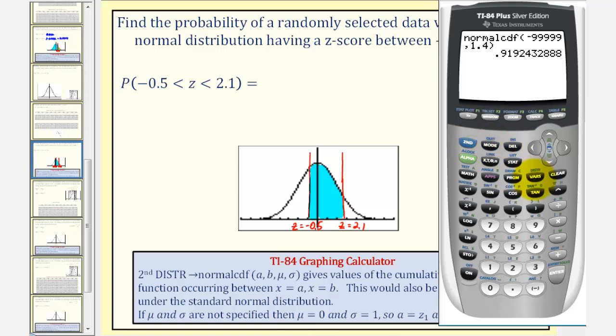Again, press 2nd VARS for distribution, option 2. Now enter the two z-scores. The lower bound z-score is negative 0.5, comma. The upper bound z-score is 2.1. Because we have the z-scores, we're leaving off μ and σ. Close parenthesis and enter. The probability that z is between negative 0.5 and 2.1 is approximately 0.6736.